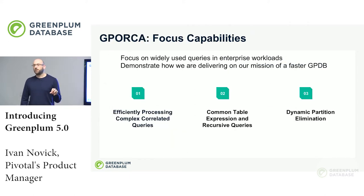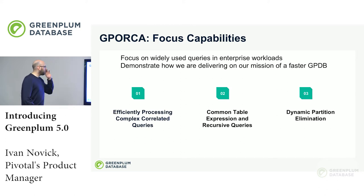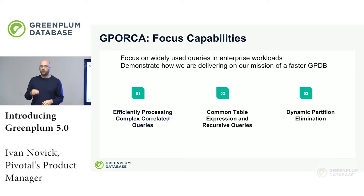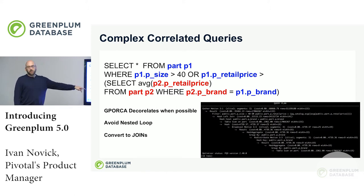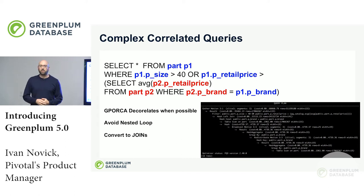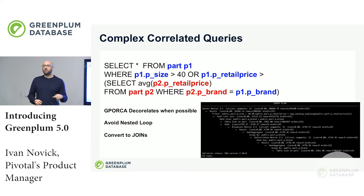Now a couple of key features I want to show you — how Greenplum delivers performance on big data. Three things: correlated queries, common table expressions, and dynamic partition elimination. When it comes to correlated queries, there's a subselect where we reference the outer table. That's a correlated query, and they are notoriously difficult to implement in a SQL engine. The naive, simple way is a nested loop — for every outer part of the query, you repeat the inner query again. As the data grows, you're doing that inner query over and over. It gets extremely slower as your data gets bigger.